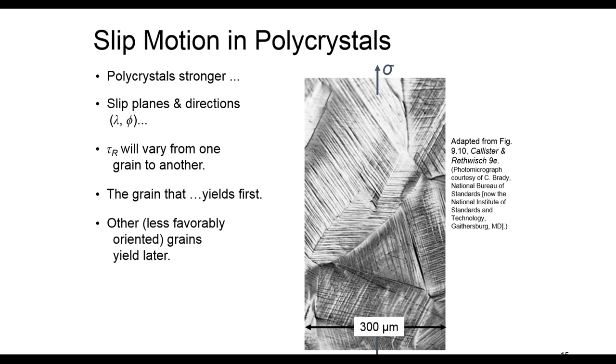So far we talked about slip in single crystals under applied stress. We will see slip along the slip plane along the direction of slip directions. But what happens when dislocations move in polycrystals?